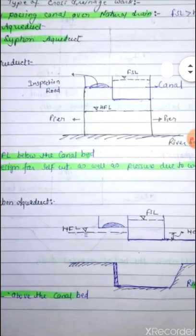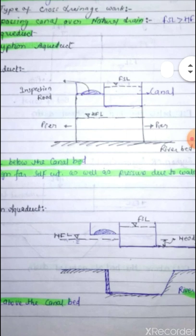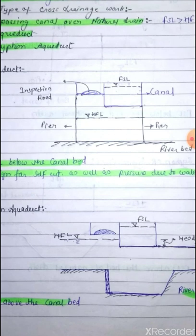In this type of arrangement, canal is carried over the natural drain. As you can see in the figure, the natural drain and river is below and the canal is above.